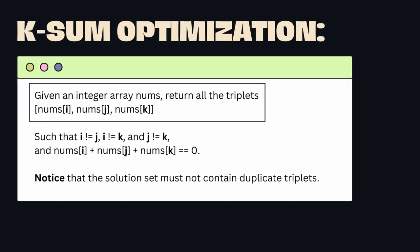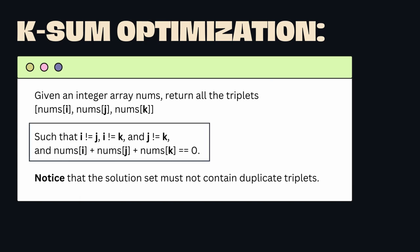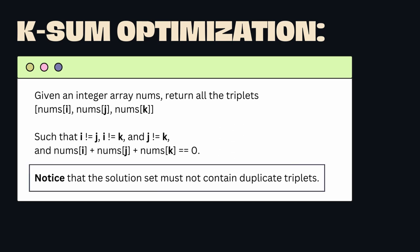Let's read this problem. Given an integer array nums, return all the triplets nums[i], nums[j], and nums[k] such that i does not equal j, i does not equal k, and j does not equal k, and nums[i] + nums[j] + nums[k] equals zero. Notice that the solution set must not contain duplicate triplets.